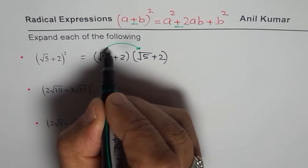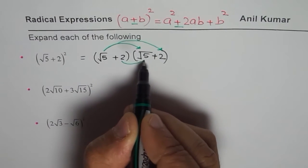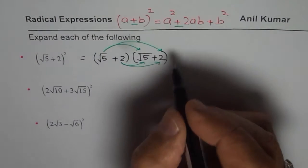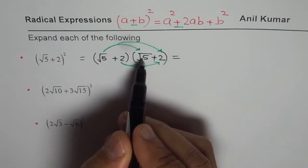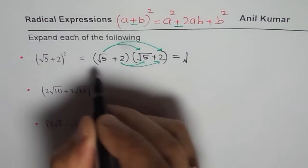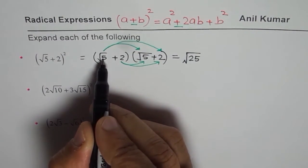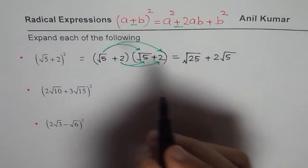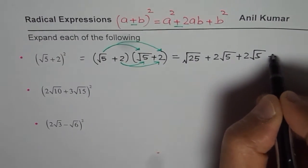We will apply the distributive property: multiply √5 by these two terms and then 2 by those two terms. So if I do √5 times √5, we get √25 within the square root. Then we multiply √5 by 2, giving plus 2√5, and then 2 times √5 gives again 2√5, and 2 times 2 is 4.